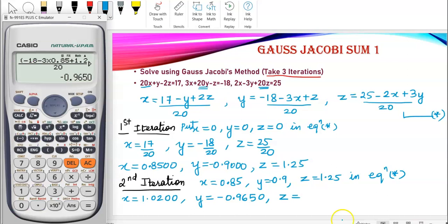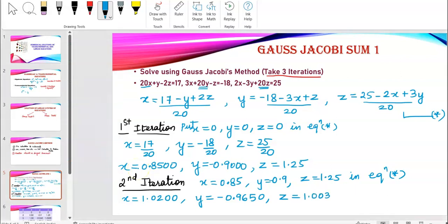Let's calculate z again from equation star. I'm pressing ac again. So, 25 minus 2 times 1.02. You may write the 00 or you may skip that. Plus 3 times, because there's a negative number, I'm putting a bracket, negative 0.965. Closing the previous bracket as well. The entire thing divided by 20. Some error. I think I did not open the bracket. So, now in decimal form, it's 1.0032.